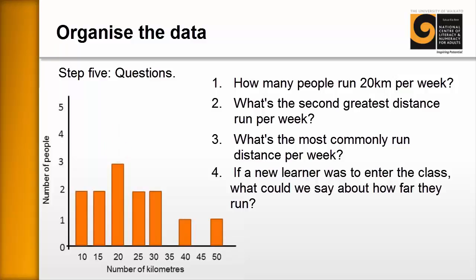Question four is beginning to use the data in the graph to make inferences or to predict what might happen in the future. If a new learner was to enter the class, what could we say about how far they run? This usually engenders good discussions because somebody will say we don't know how far they run, but you can get a sense. They're likely to run somewhere between 10 and 50 kilometres, just based on the evidence that we already have.